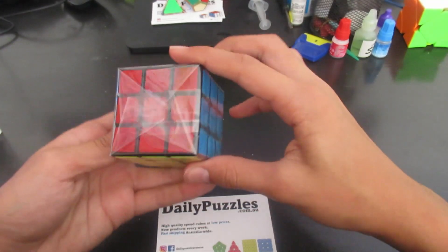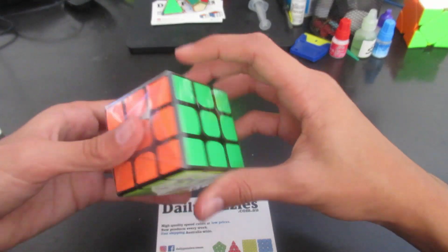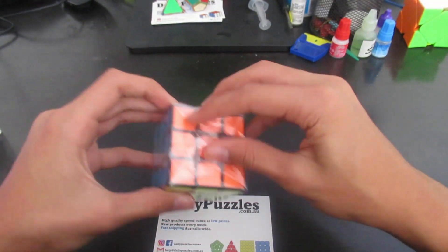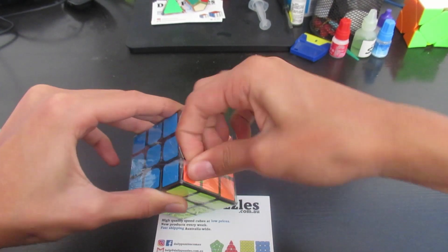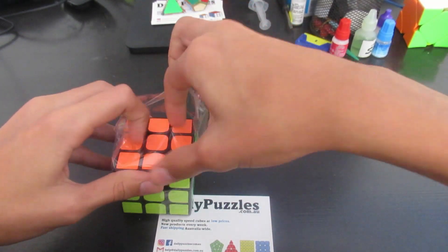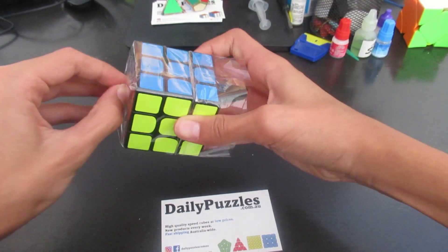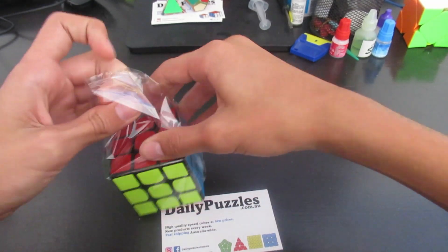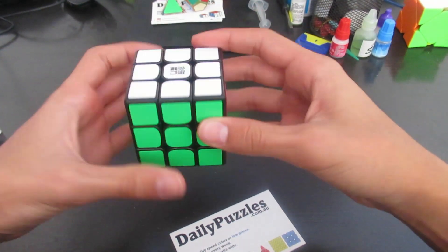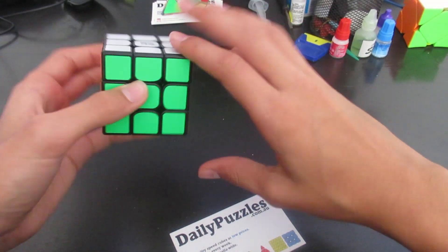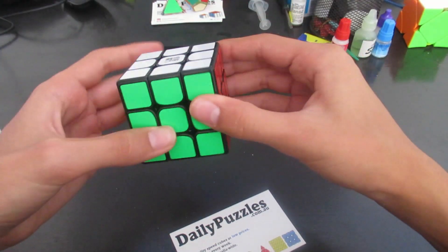Alright, so let's open this up. Alright, so here we have the Yulong version 2, oh it's magnetic as well, which is interesting. Alright, so let's give it some turns.